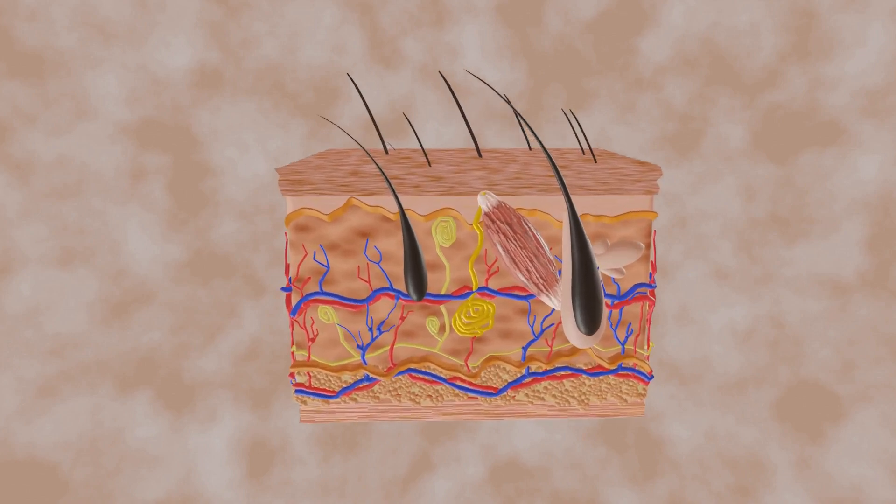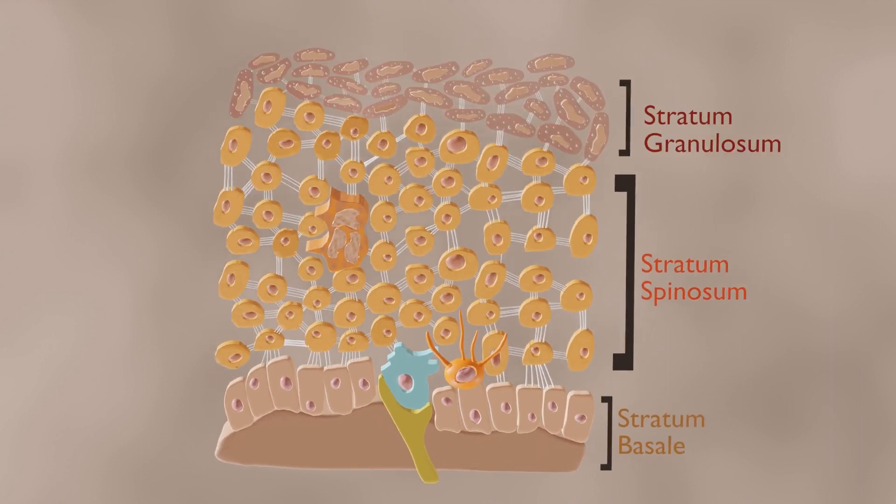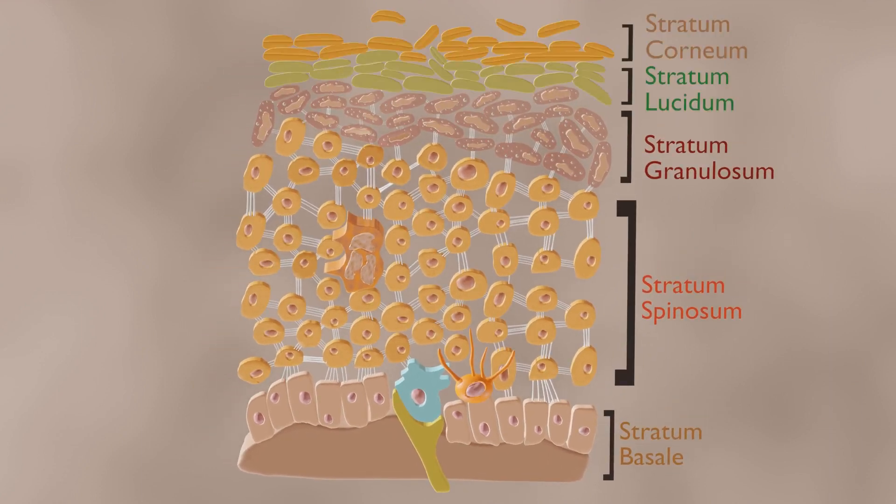Epidermis is the outermost layer of the skin. It is made of layers of epithelial cells, which include stratum basale, the deepest portion of the epidermis, stratum spinosum, stratum granulosum, stratum lucidum, and stratum corneum.